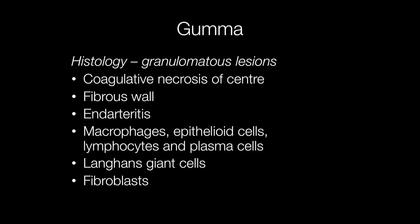Histologically, a gumma is a granulomatous lesion showing coagulative necrosis at the centre, surrounded by a fibrous wall. Within the fibrous wall there is endarteritis, an infiltrate of macrophages, epithelioid cells, lymphocytes, plasma cells, Langhans giant cells and fibroblasts.